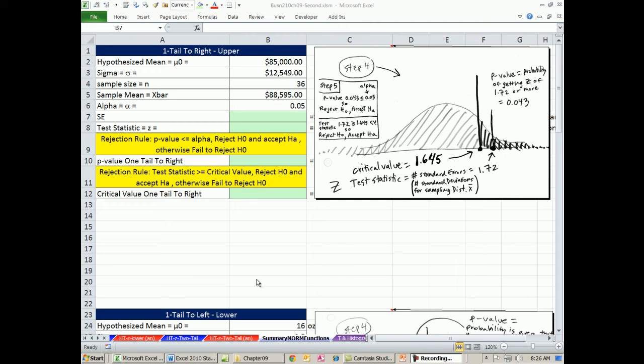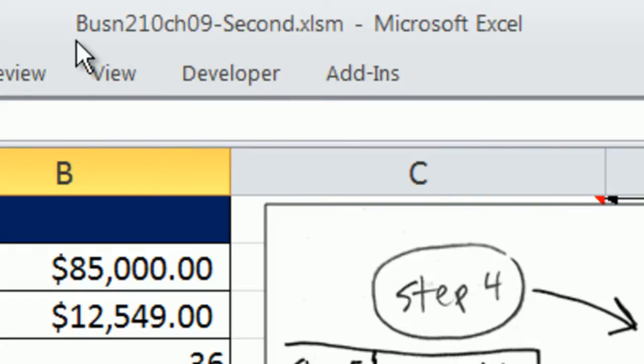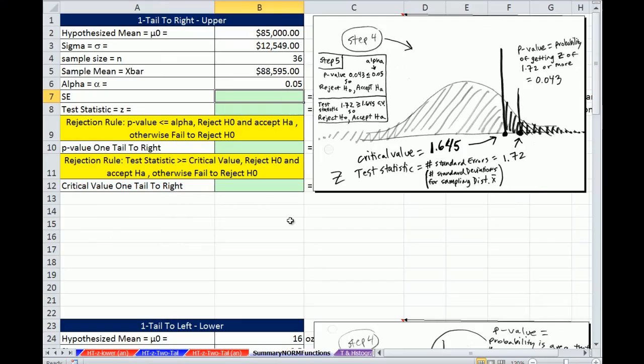Welcome to Excel 2013 statistical analysis video number 56. If you want to download this workbook, Business 210 Chapter 9, Second Workbook, click on the link below the video.